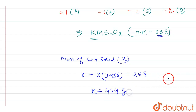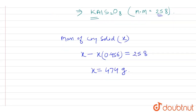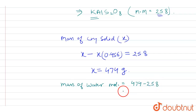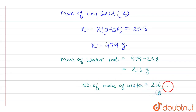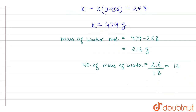The mass of water molecules is 474 − 258 = 216 grams. The number of moles of water is 216 ÷ 18 = 12.